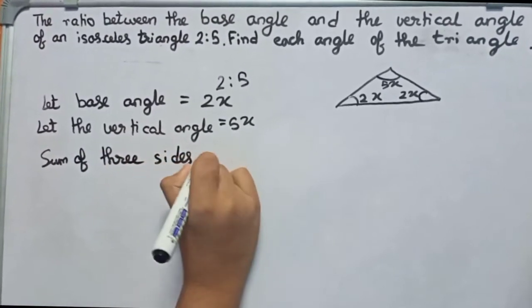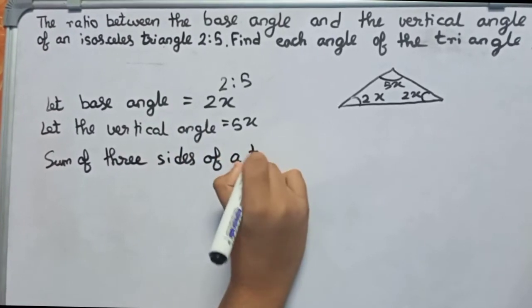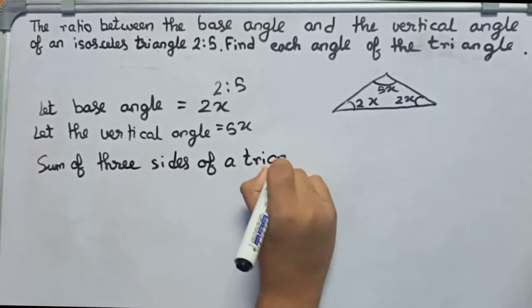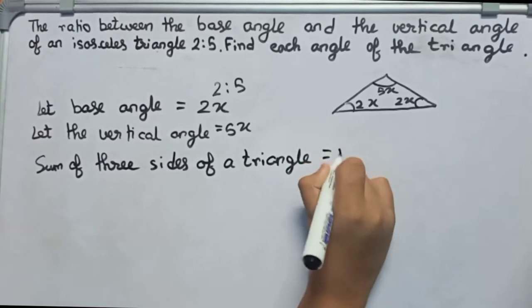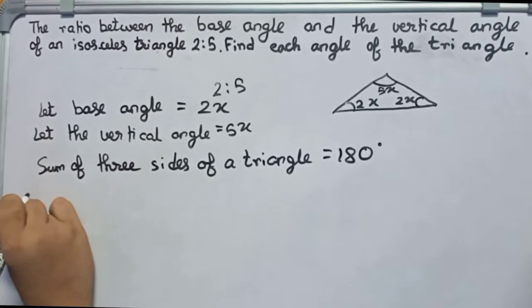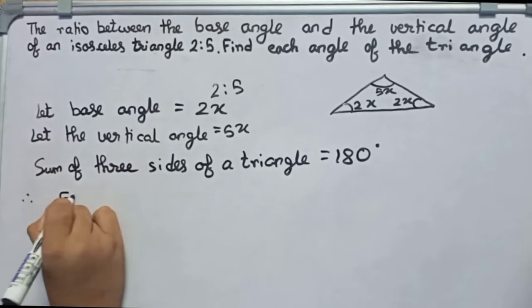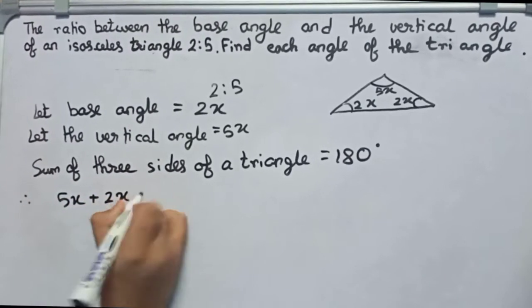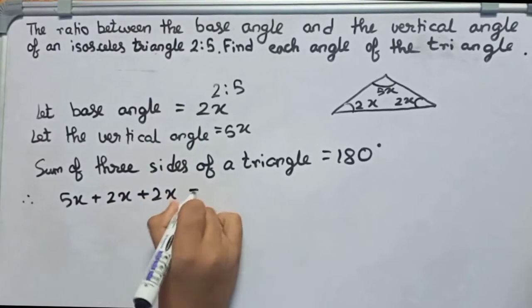So now therefore you can write 5x plus 2x plus 2x equals to 180. The sum is 180.